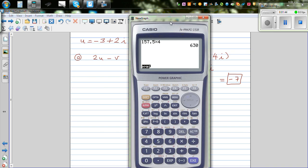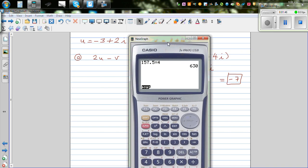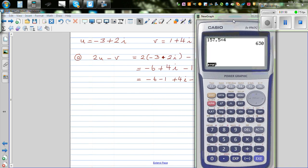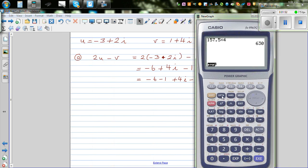Let's do this on a calculator. If you go to option, complex number, f3, and type in 2 bracket minus 3 plus 2i, press f1 for i, minus v which is 1 plus 4i. This is how you can check your answer, which is minus 7.